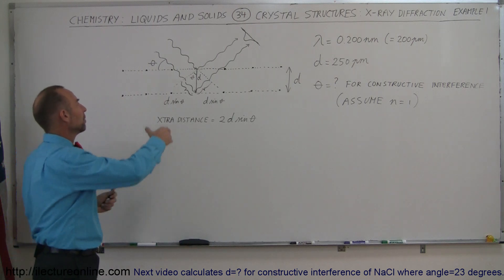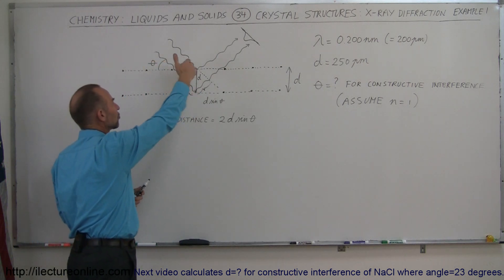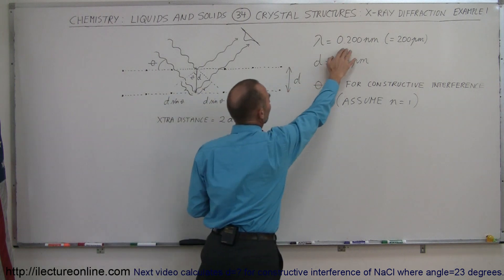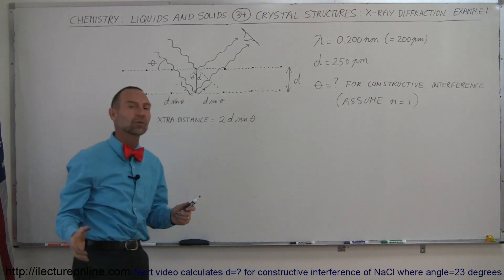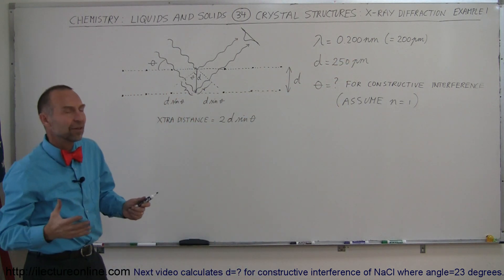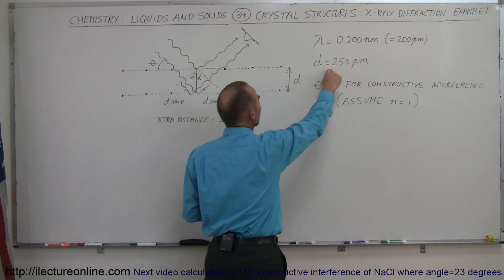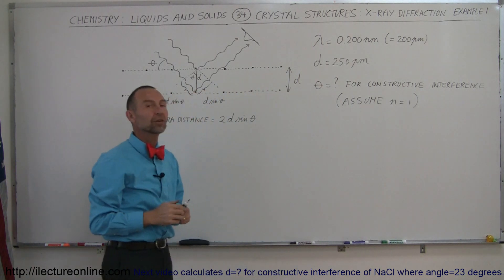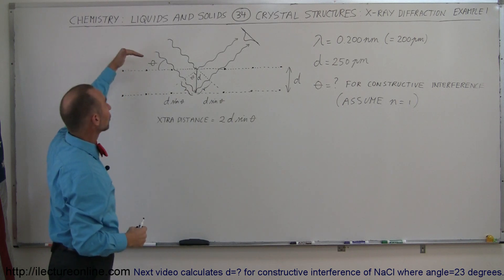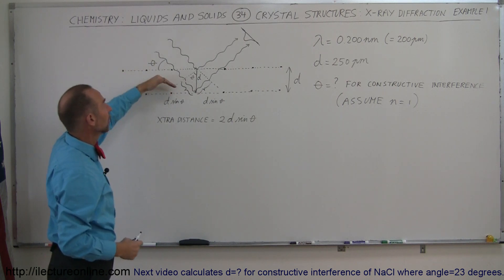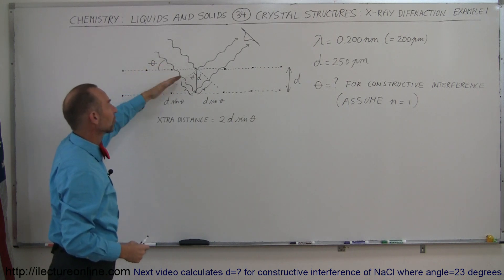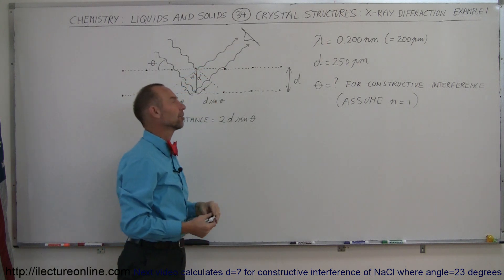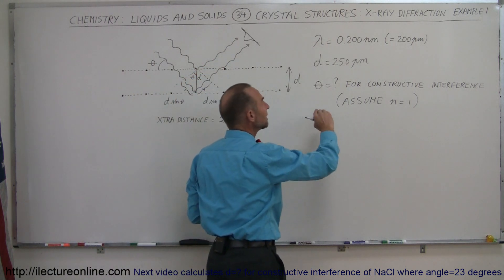Let's say that we're bombarding some sort of crystal structure with X-rays. The wavelength of the X-rays is 0.2 nanometers, which is 200 picometers, and the separation distance between the first two layers is 250 picometers. The question is: at what angle do we need to bombard the crystalline structure with X-rays so that we see constructive interference at the detector?